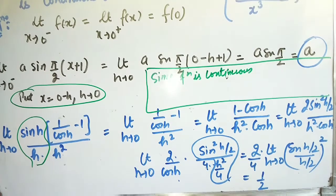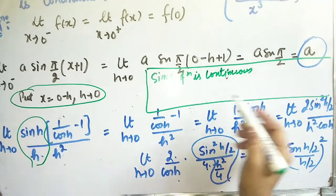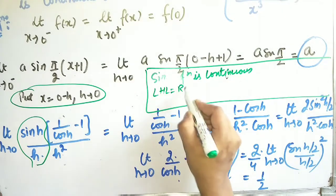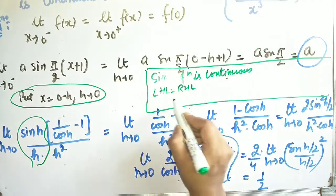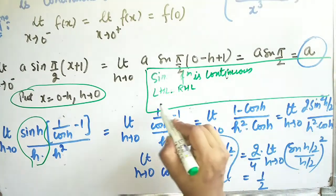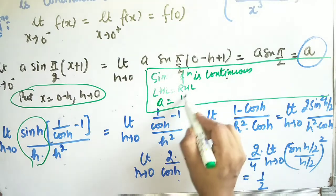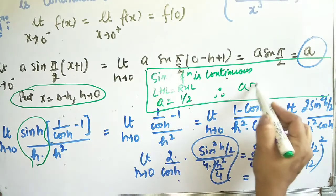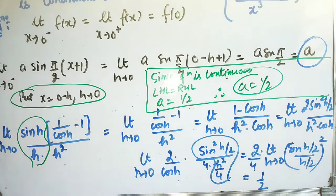Since the function is continuous, left-hand limit equals right-hand limit: a = 1/2. Therefore a = 1/2. In the next video, we are going to continue with questions on the greatest integer function. Thank you.